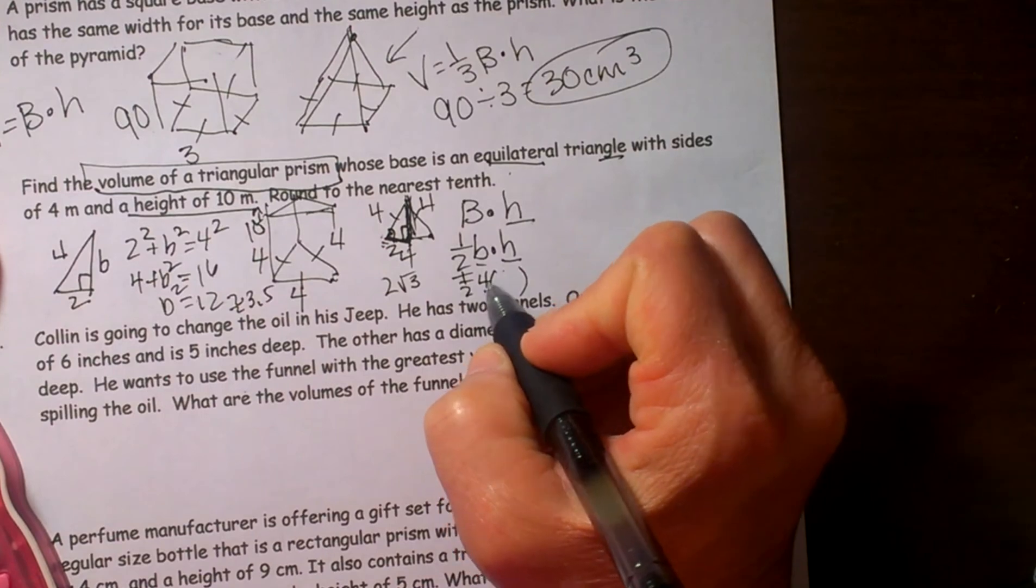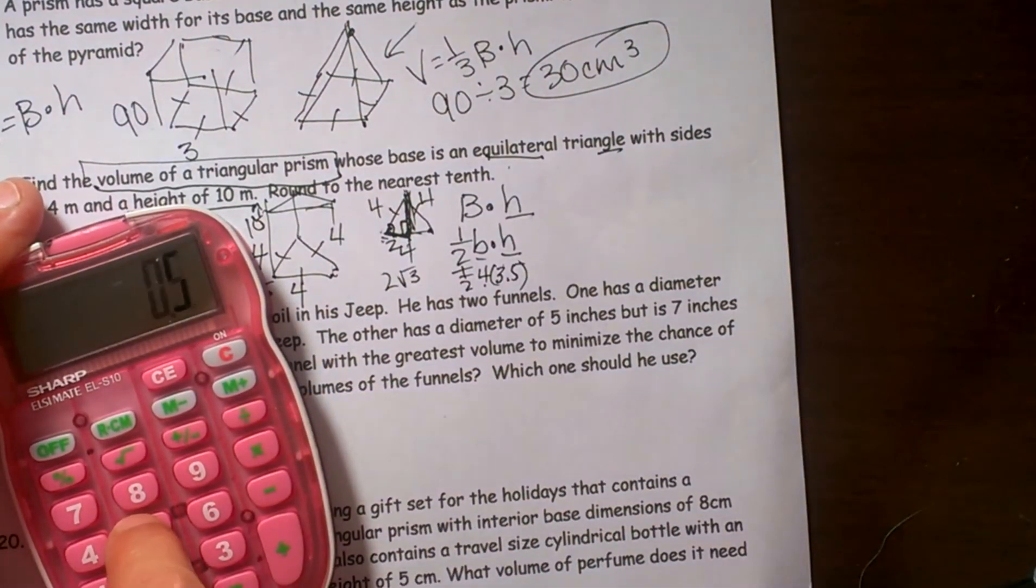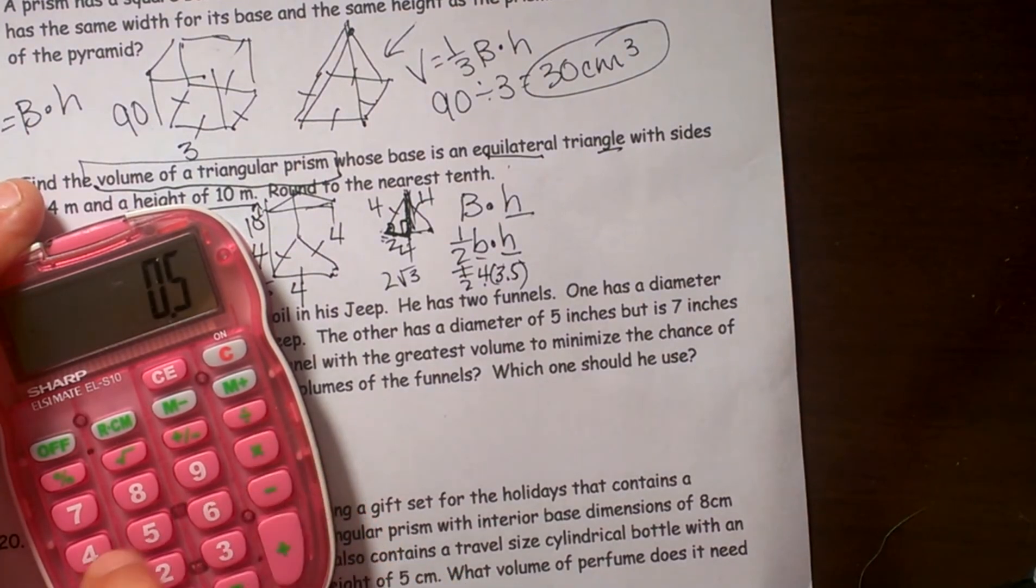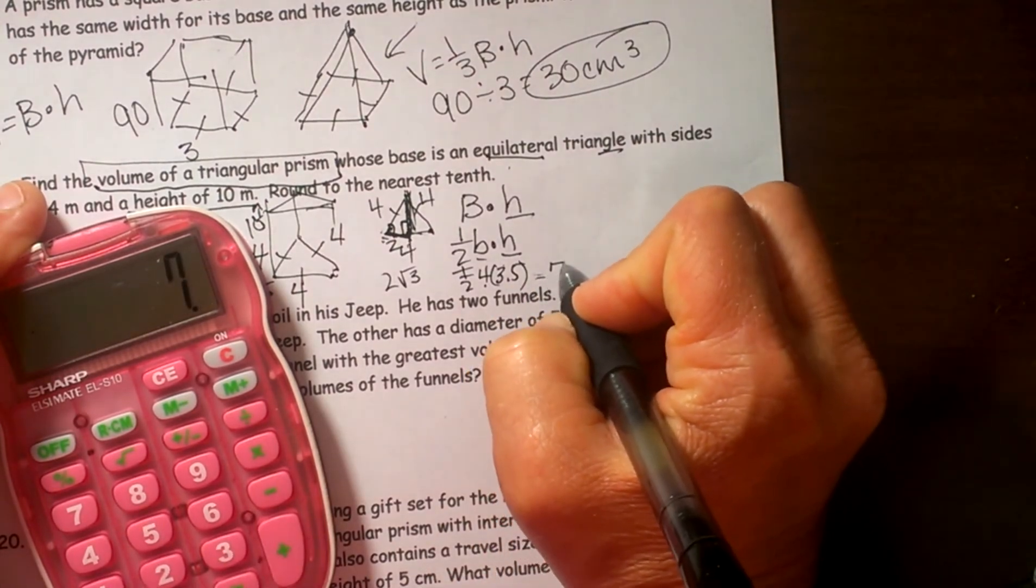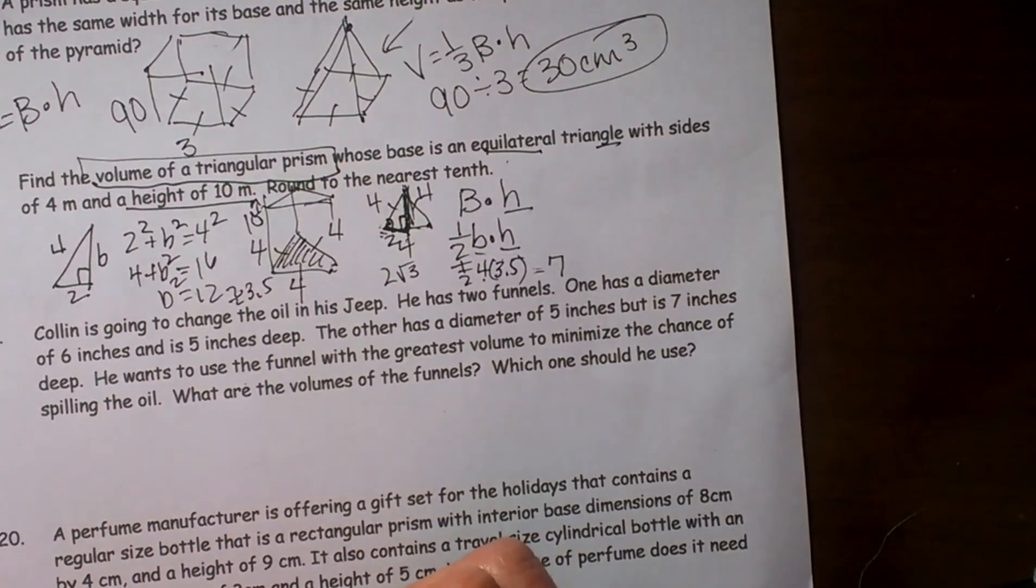So let's use 3.5 for our height. So one half times 4 times 3.5, so 0.5 is a half times 4 times 3.5, and that gives us a base area of 7. Oh, that was a lot of work just to find the base area. But that is our base area.